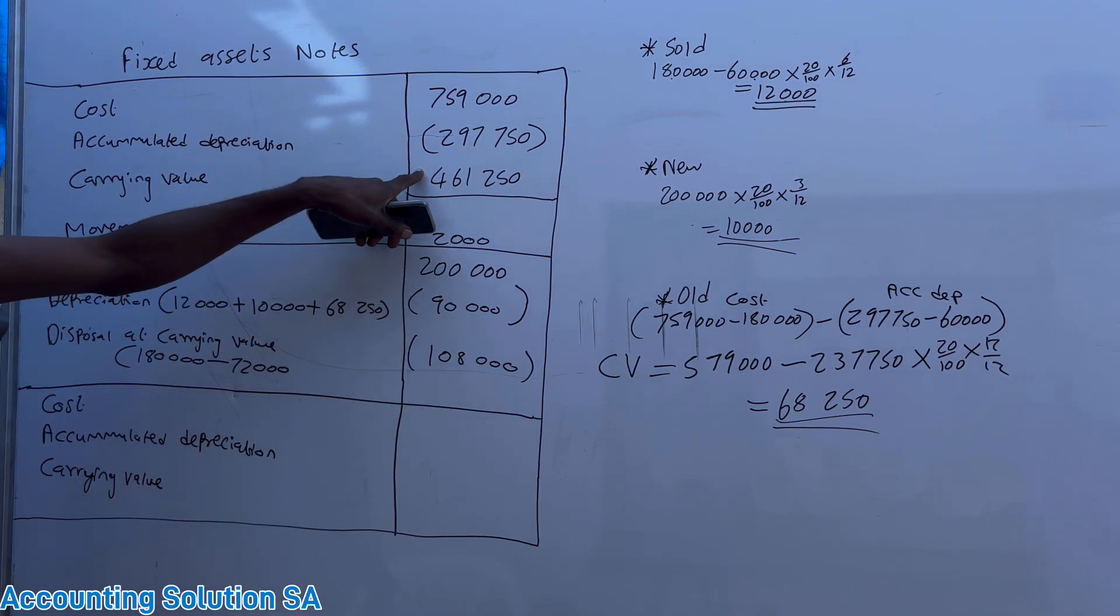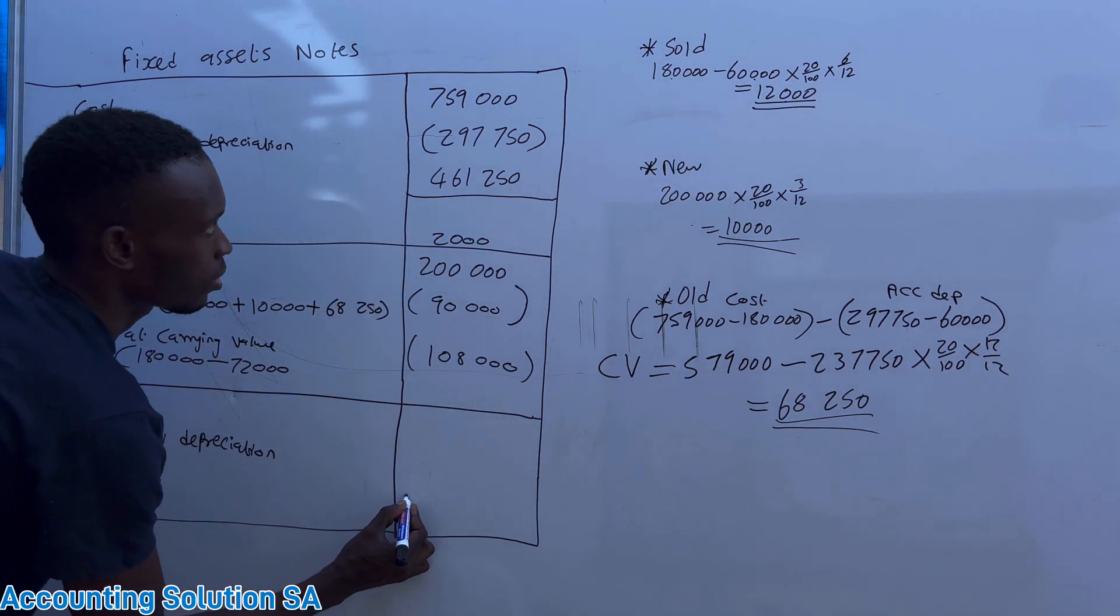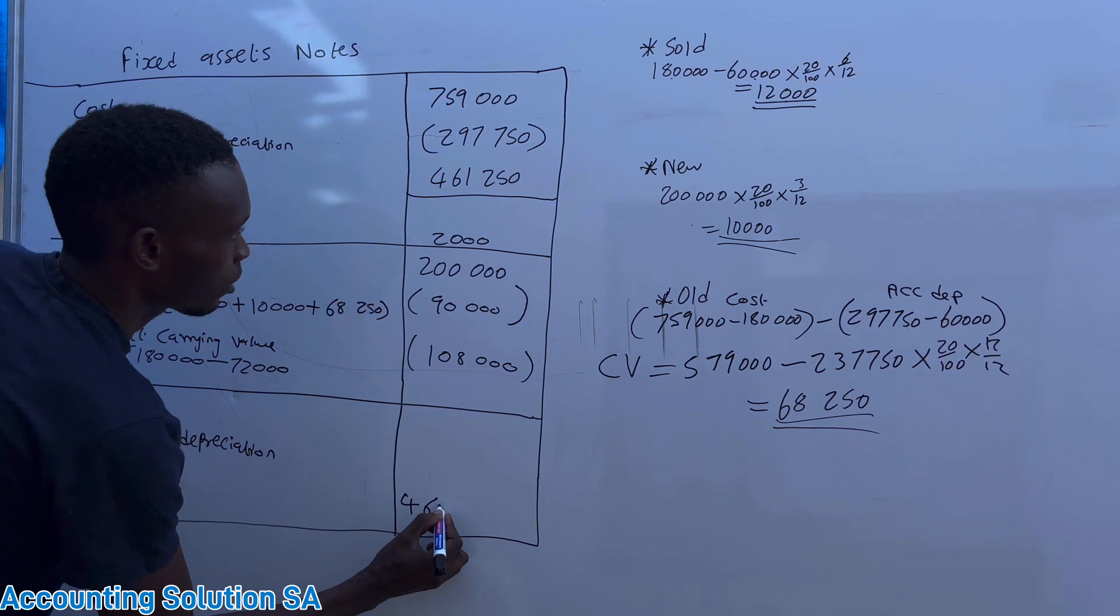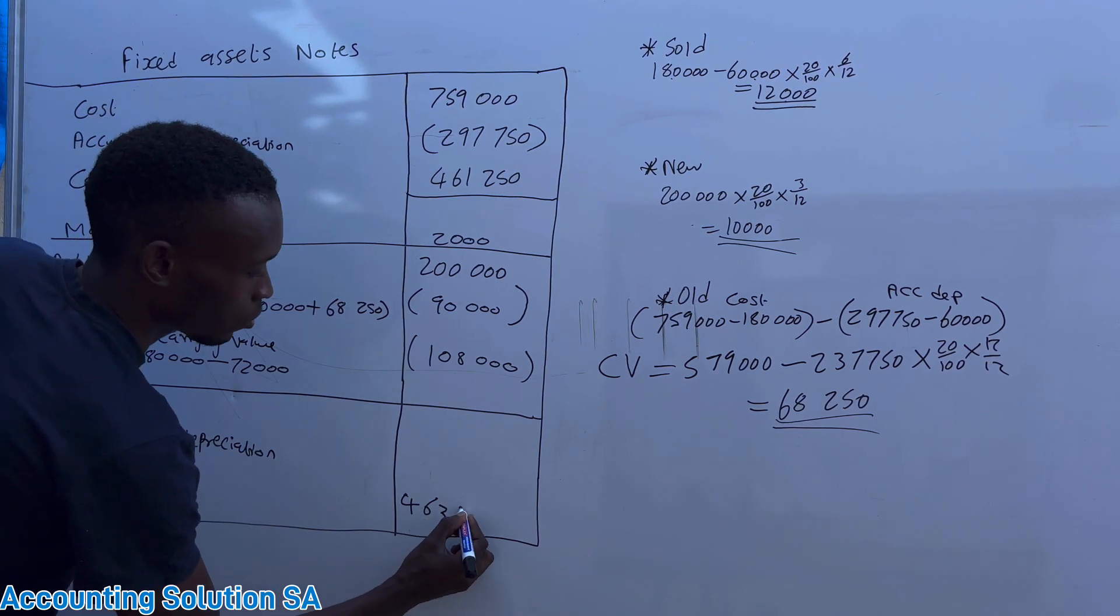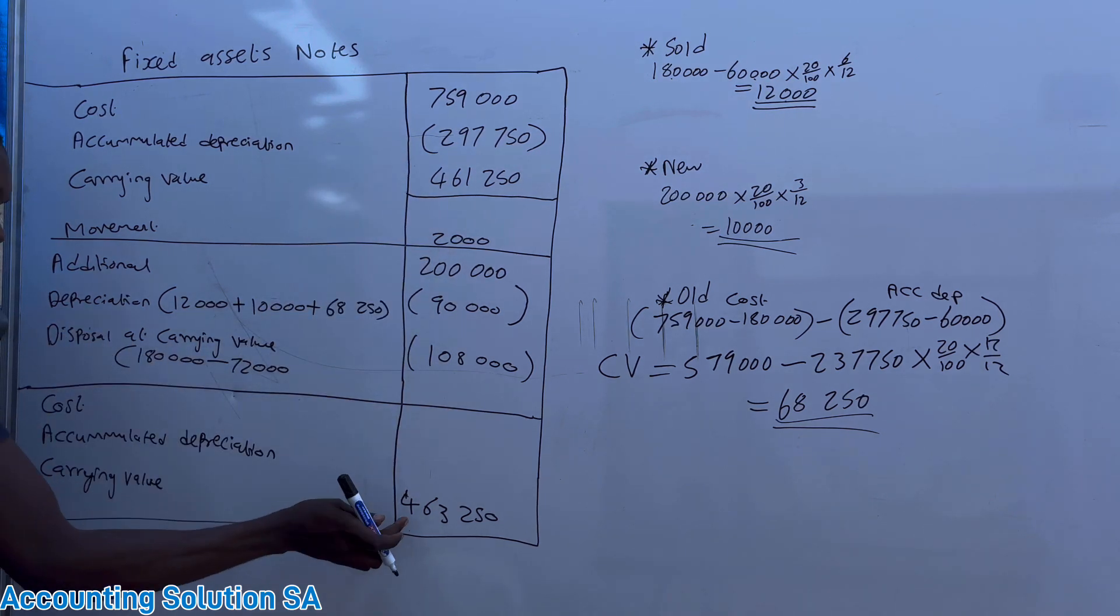Now for you to calculate a current value at the end, it can be simple if you have these two amounts, because you just say this current value plus movement is gonna give you current value at the end, which is 463,250. You just take these two and you add them together, they're gonna give you this one.